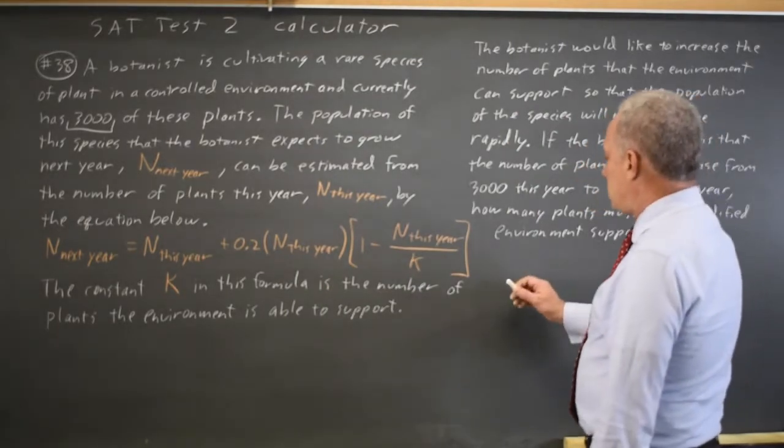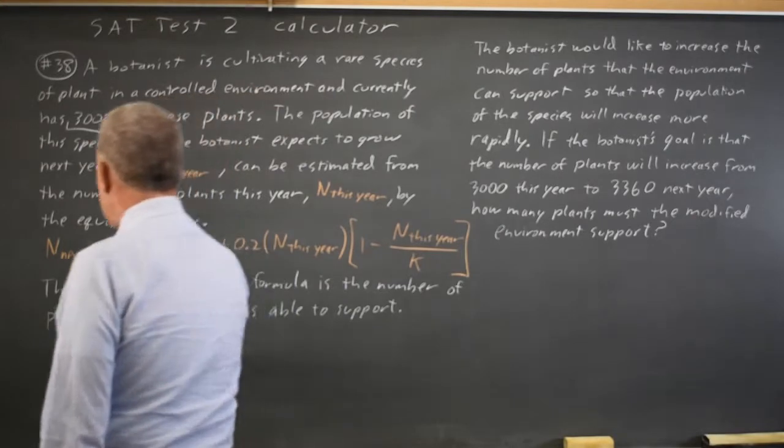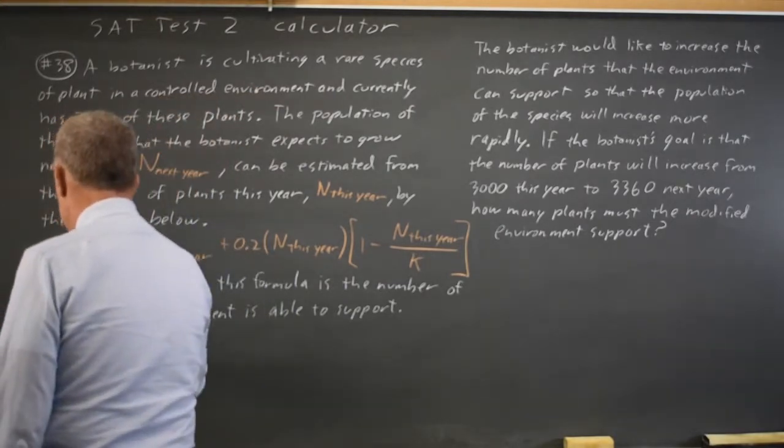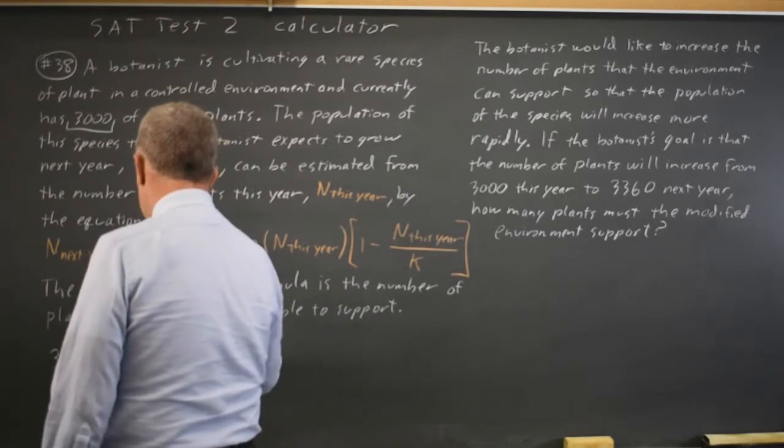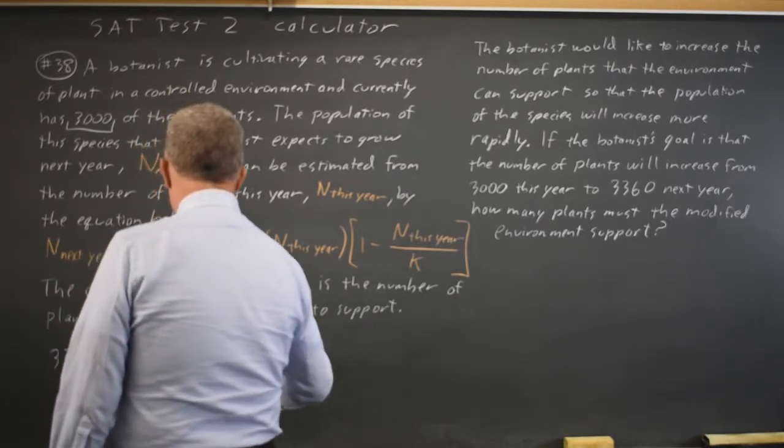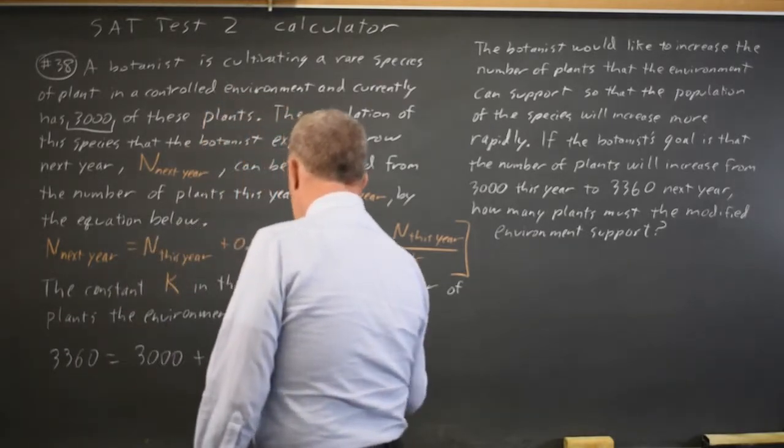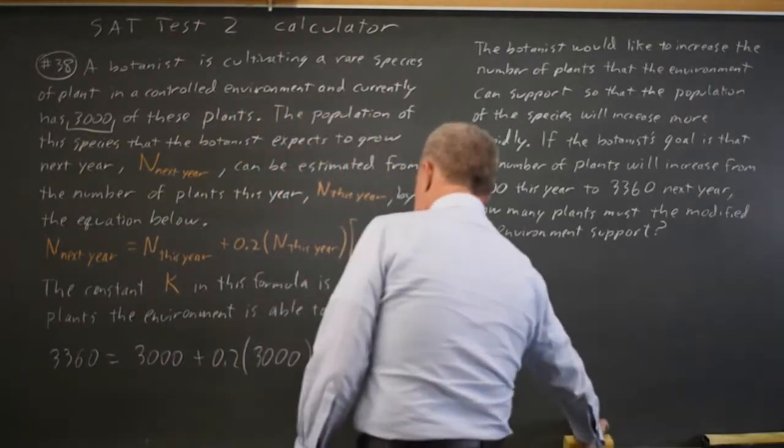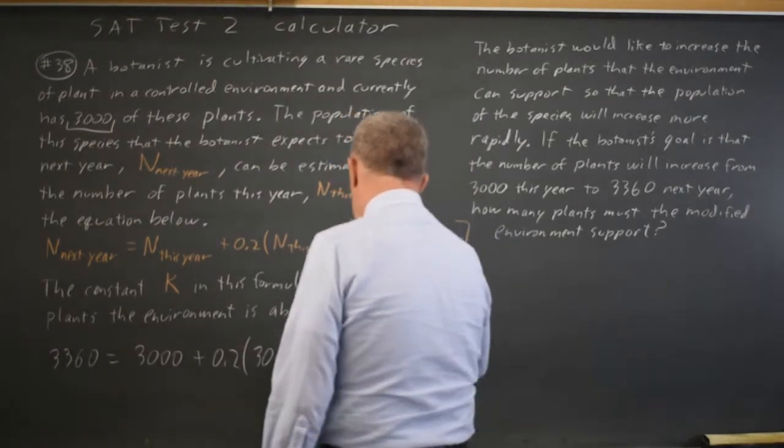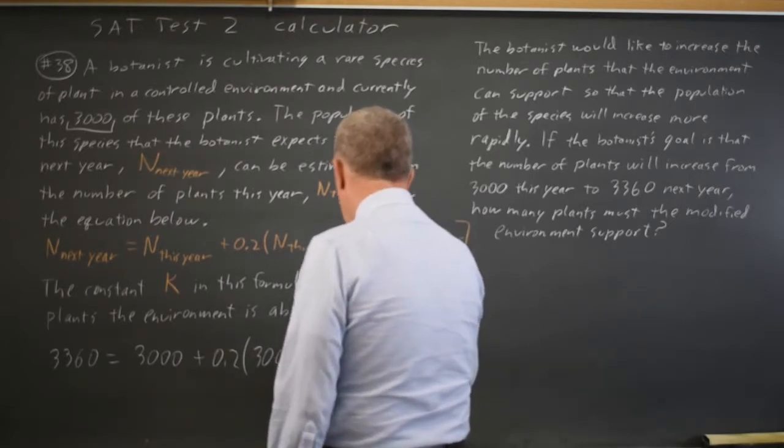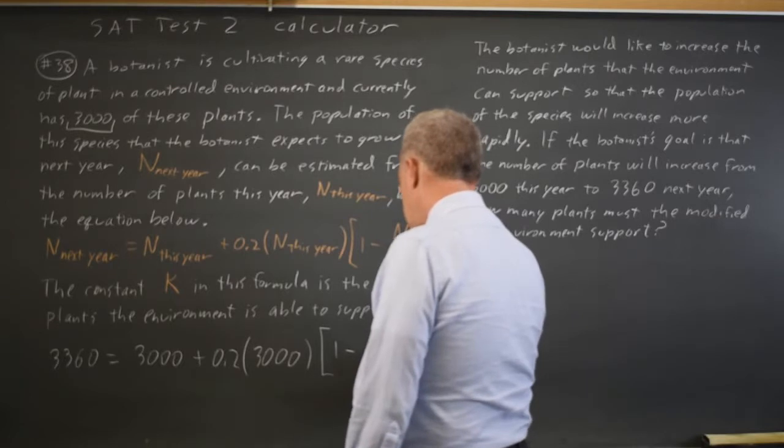I can solve this by substituting values for this equation. N next here is 3,360 equals N this here which is 3,000 plus 0.2 times N this here is still 3,000, times 1 minus N this here which is 3,000, 3,000 over K.